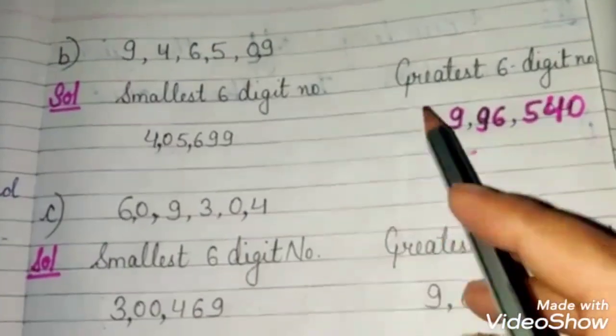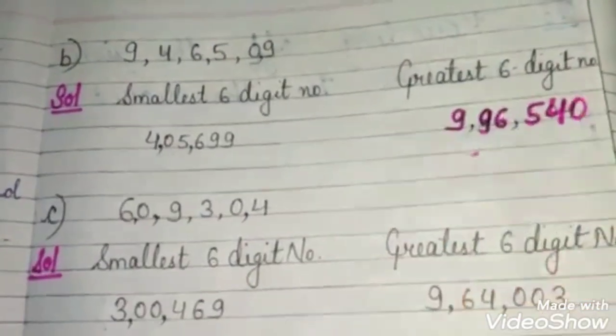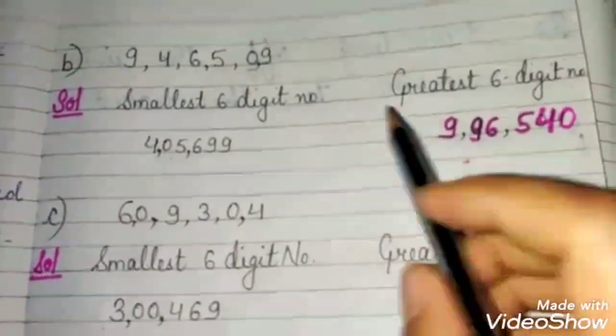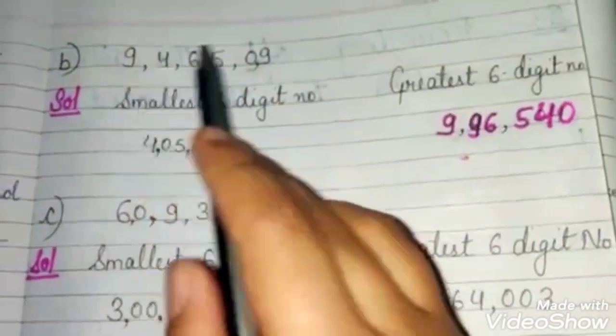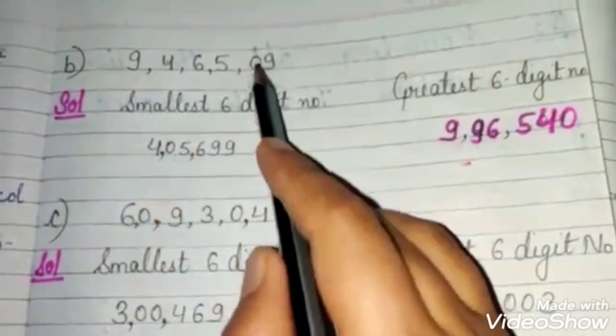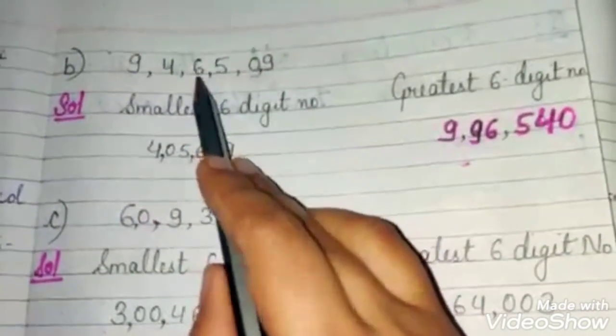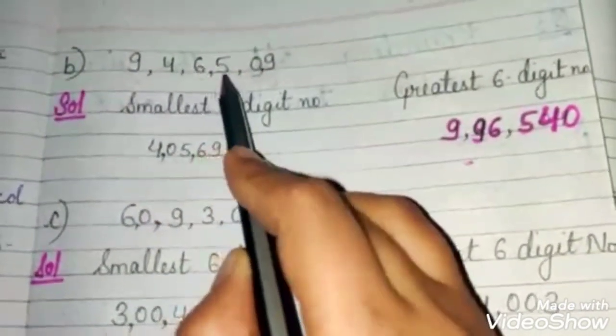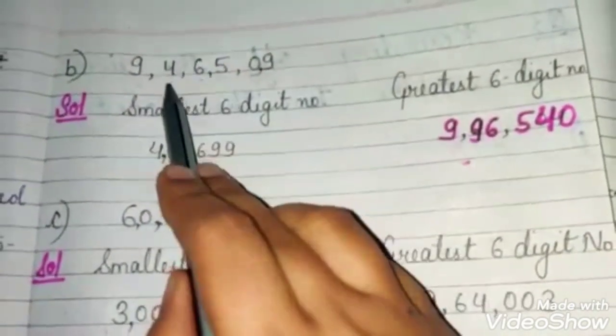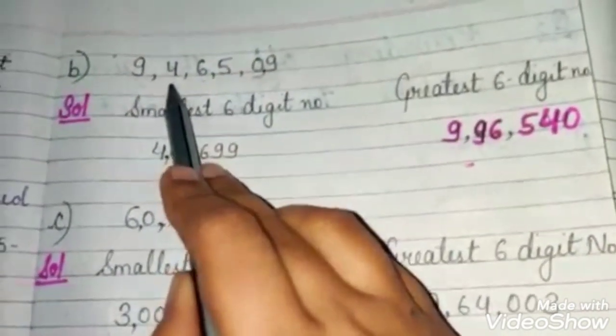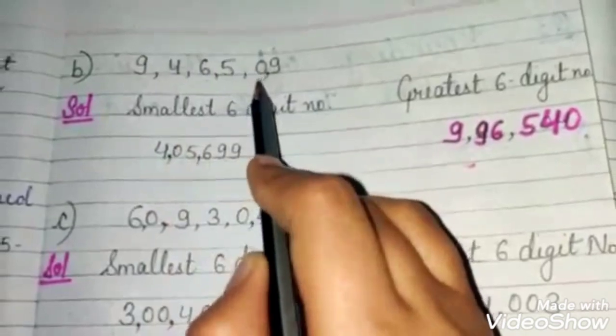The greatest 6-digit number from digits 9, 4, 6, 5, 5, 0 is: 9, then 9, then 6, then 5, then 4, then 0.